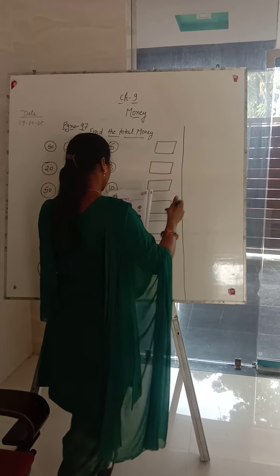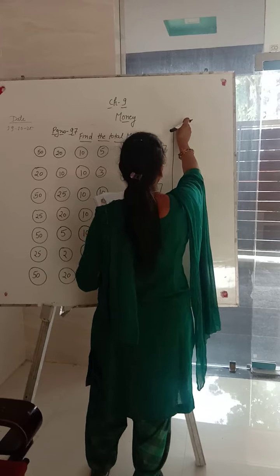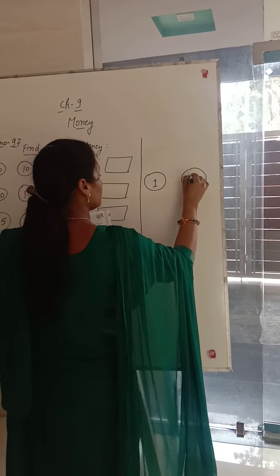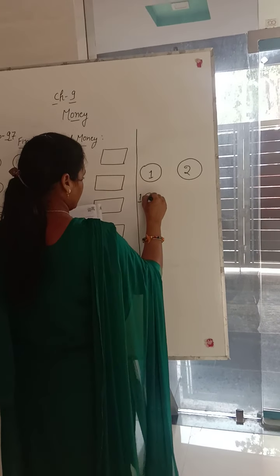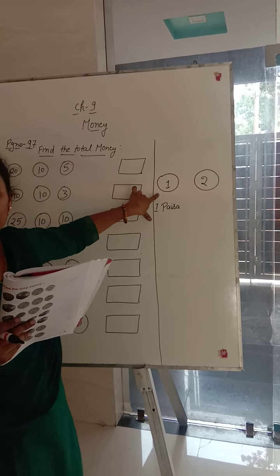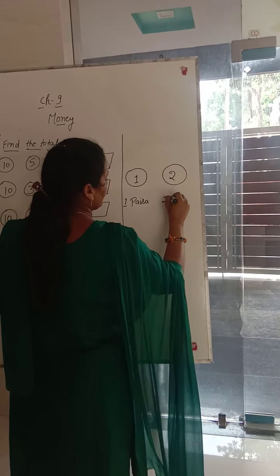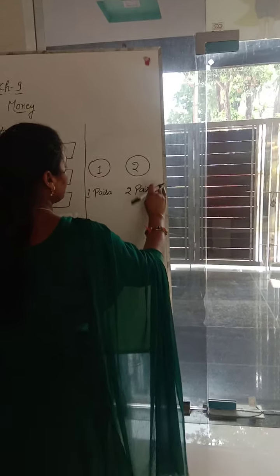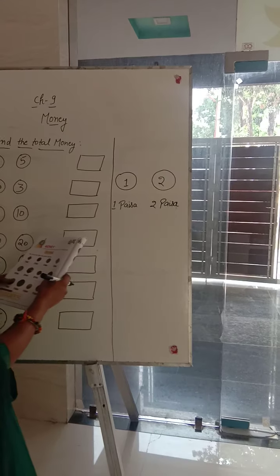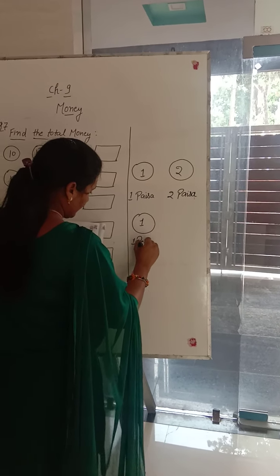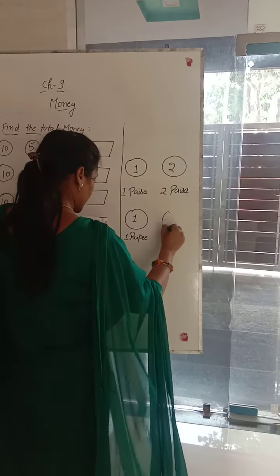First of all I am telling you what is a coin. Coins hote hi hain. For example, this is one paisa coin — you can have a 1 paisa coin. And this is a 2 paisa coin. But these coins are not in circulation at present time. This is 1 rupee coin. This is 2 rupees coin.